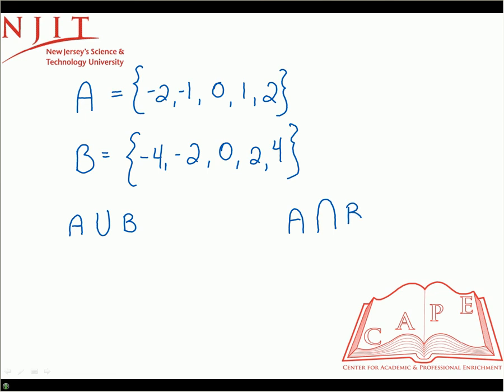The union pretty much describes the elements that exist in A or B or in both. If we were told to find the union of A and B, we would list all the elements but not repeating any. You have to make sure you do it in order.